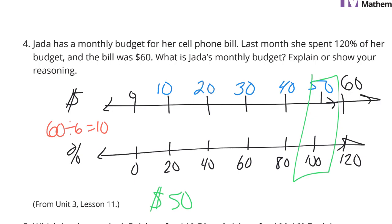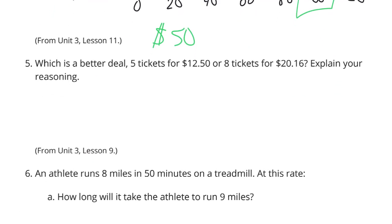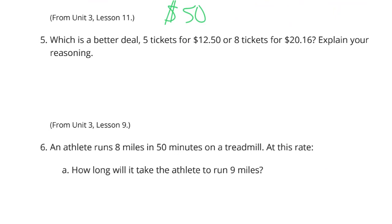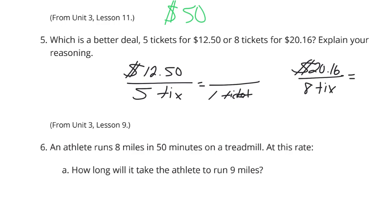Continuing on to question five. Which is a better deal? Five tickets for $12.50 or eight tickets for $20.16? Explain your reasoning. Well, if we have $12.50 for five tickets, we could figure out how much does one ticket cost. Same thing if we have $20.16 for eight tickets, we could figure out how much one ticket costs.